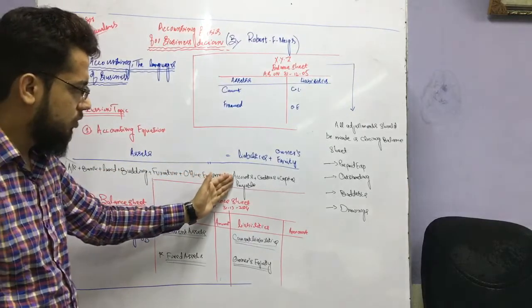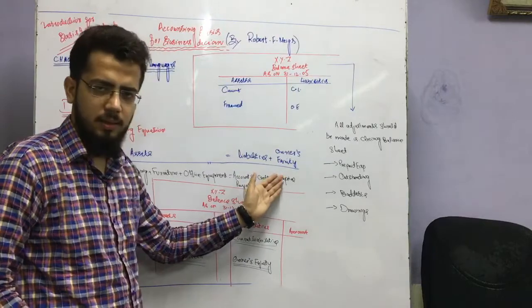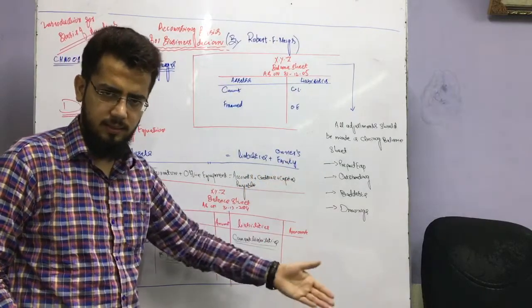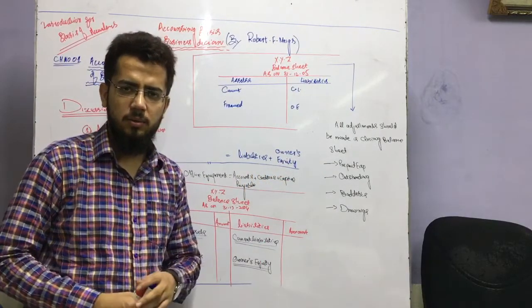Liabilities: accounts payable, creditors. Capital will continue.